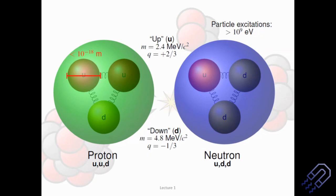Apart from up and down, there are four more quarks: strange, charm, top, and bottom. All six quarks combine to form different particles. As I said, the proton and neutron are not fundamental — they are made up of quarks. These quarks have a different dimension altogether; it is less than 10 to the power minus 18 meters. So within the 10 to the power minus 15 meter nucleus we have three more particles each at 10 to the power minus 18 meters or less — they are tightly packed.